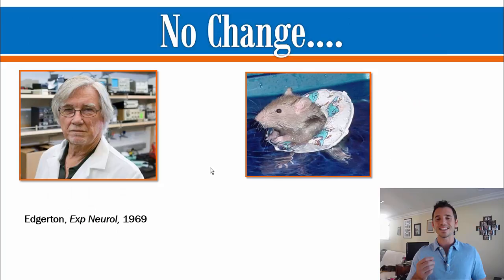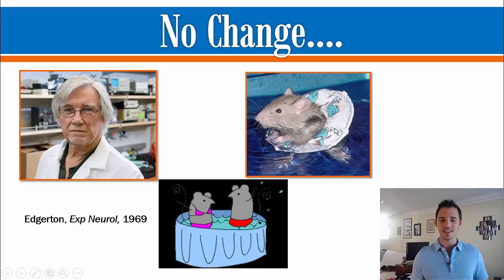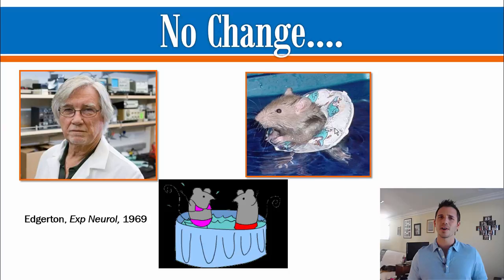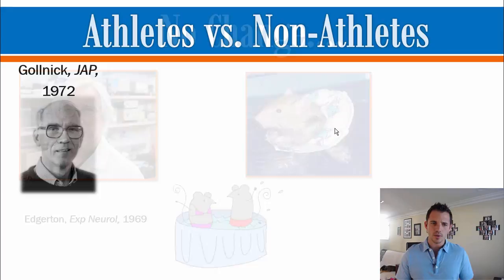This question about the plasticity of fiber types with different types of exercise training has been around for a very long time. In the early 1960s and early 1970s, a famous muscle physiologist named Dr. Edgerton came up with a study to answer this question. He looked at animal models, used histochemistry, and put these animals through swim training. He did this first initial study in 1969 and found essentially nothing — no change at all.